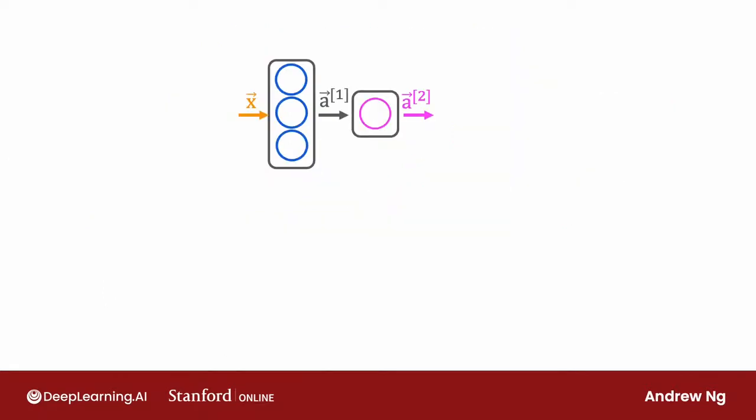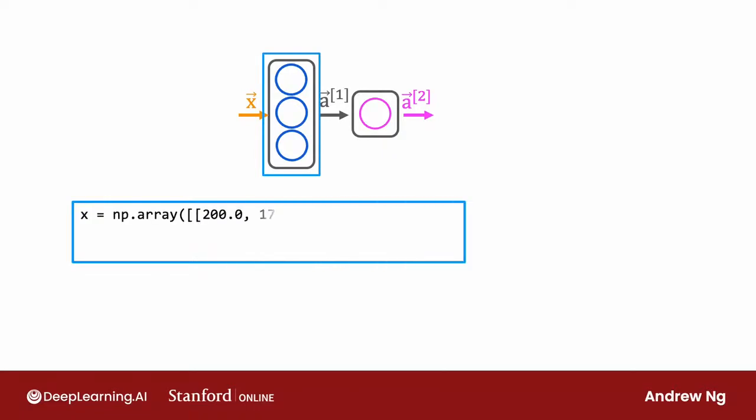It looks like this. We're going to set x to be an array of two numbers, the input features 200 degrees Celsius and 17 minutes. Then you create layer_1 as the first hidden layer of the neural network as dense with units=3. That means three units or three hidden units in this layer, using the sigmoid function as the activation function. Dense is another name for the layers of a neural network that we've learned about so far. As you learn more about neural networks, you'll learn about other types of layers as well.